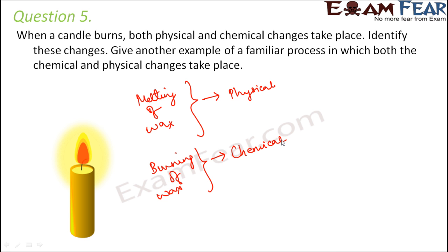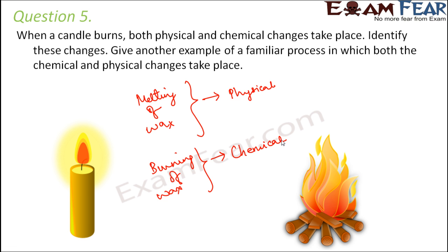Another example is burning of wood. When wood burns, it is a chemical change because carbon dioxide is released and ashes are formed — new substances are formed. But wood also contains water, which gets converted into water vapor. Since water and water vapor both have the same chemical composition (H2O), just changing state from liquid to vapor, that part is a physical change.